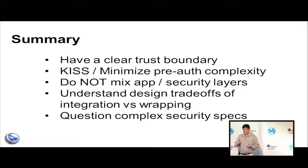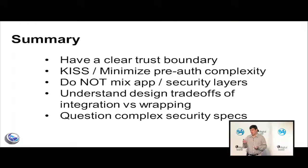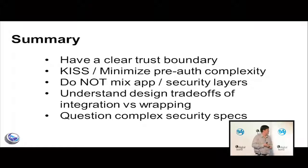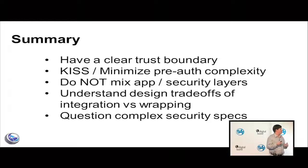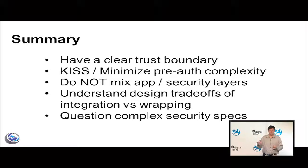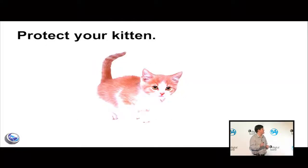In summary, these are software engineering considerations that a lot of protocol bodies don't think about: have a clear trust boundary, keep it simple, don't mix application and security layers. For asset owner-operators thinking about picking a secure protocol, make sure you understand the design trade-offs — why things are encryption only, versus integration and wrapping. Any time you see a really complex security spec, that's probably a red flag. Know where your complexity is.